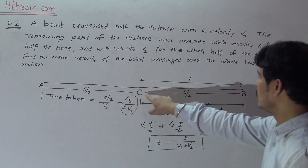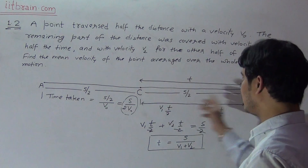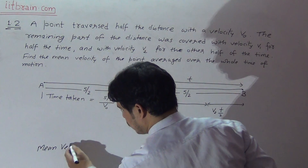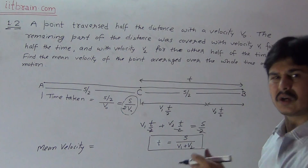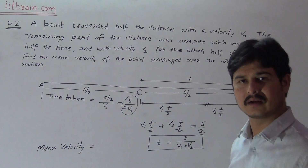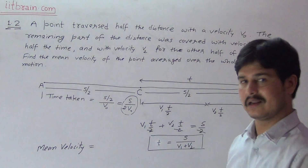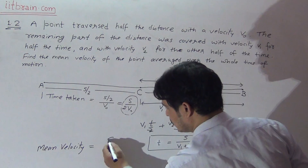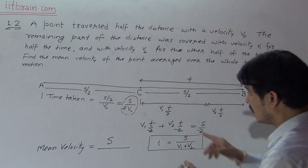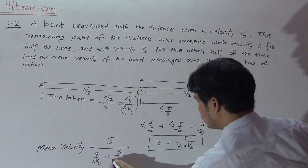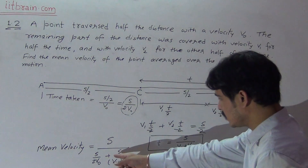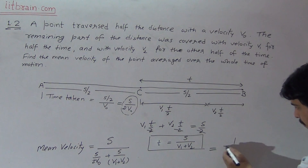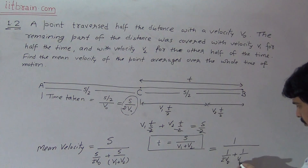This is the time for the second part, and S/(2V0) is the time for the first part. Our question is to find the mean velocity. Mean velocity, by definition, is total distance divided by total time. Since we are discussing motion in a straight line, distance and displacement are the same. Total distance is S/2 + S/2 = S, and total time is S/(2V0) + S/(V1+V2). Taking S from the denominator, S cancels, giving: 1 / [1/(2V0) + 1/(V1+V2)].